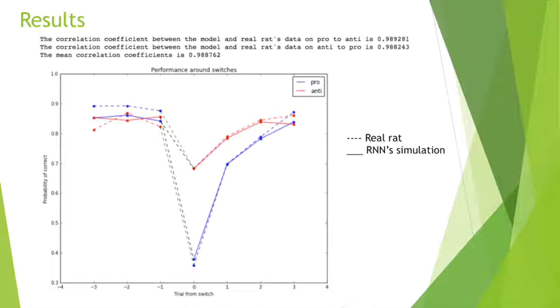This figure is plotted in the same style as figure 3D in Duan et al.'s paper. It plots the average correct rate around block switches.